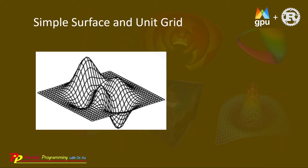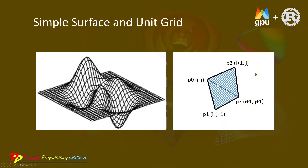However, WGPU only provides triangles as the basic units to represent any surface in 3D. In order to represent a surface using traditional quadrilaterals, we need to write our own functions. Here shows a unit grid, which is a quadrilateral with four vertices: P0, P1, P2, and P3.